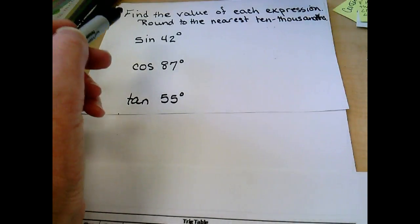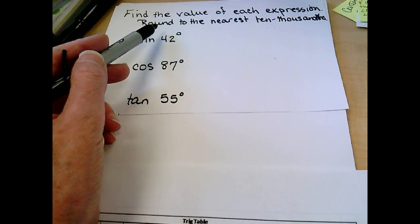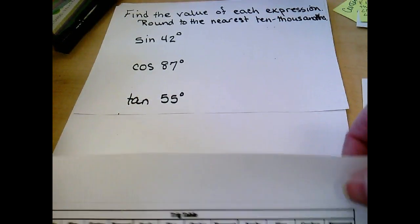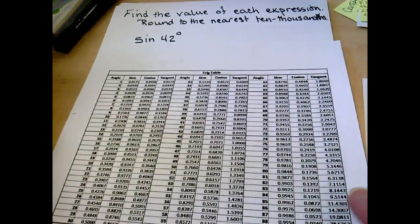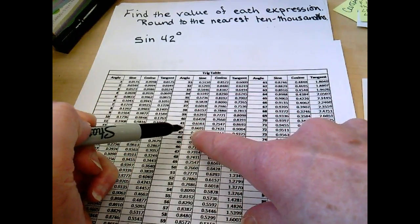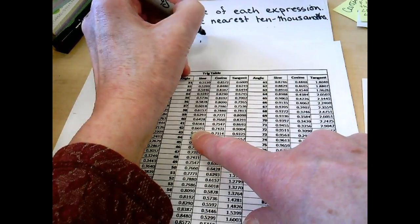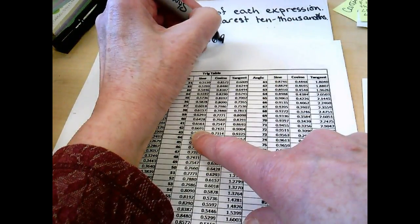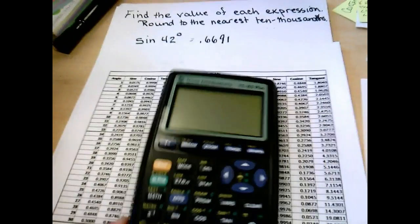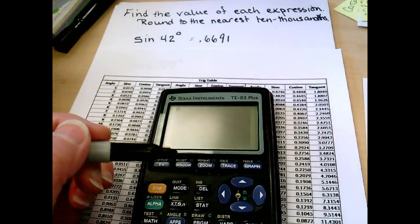If we are looking to find the actual value of each angle in degrees, find the value of each expression, round to the nearest ten thousandths. Sine of 42 degrees, we could use a trig table, where we go down to 42 degrees, go over to sine, and it is 0.6691. If you have a scientific calculator, though, we can use it to find the sine of 42 degrees.